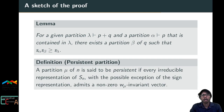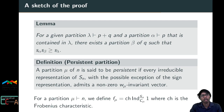We say a partition μ of n is persistent if every irreducible representation of Sn, with the possible exception of the sign representation, admits a non-zero w_μ-invariant vector. We define F_μ to be the Frobenius characteristic of the induction of the trivial representation of C_μ to Sn.